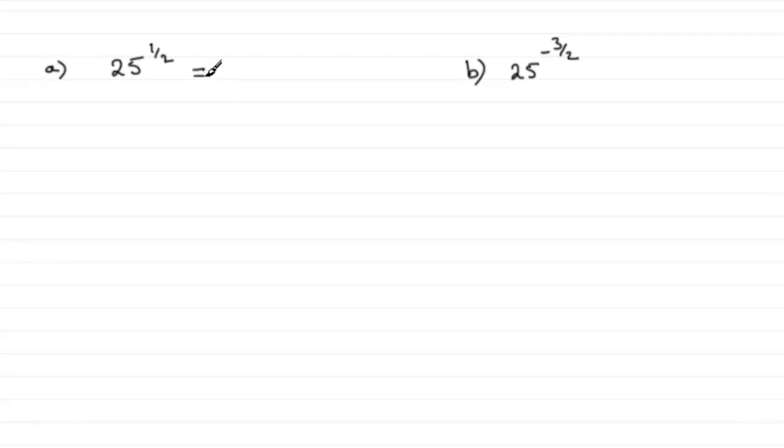Well, we should know that anything to the power of half means the square root, the square root in this case then of 25. If it was to the power of third, it would be the cube root and so on. So, the square root of 25 is going to be 5.